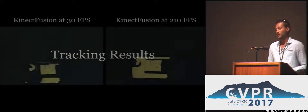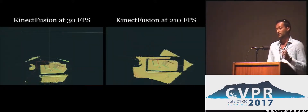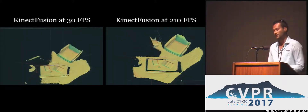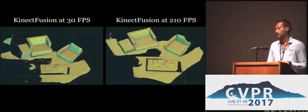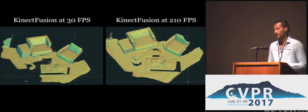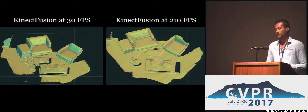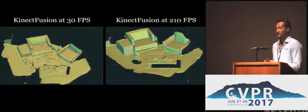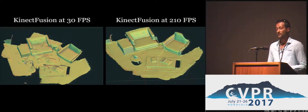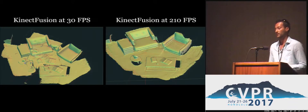We show some results on high-level applications such as static scene fusion at 30 FPS versus 210 FPS. At 30 FPS, the system is able to track up to a certain point, but due to large frame-to-frame motion it will start to hallucinate surfaces and lose tracking. At 210 FPS, instead, it is much more robust and we don't even need sophisticated bundle adjustment techniques or relocalization methods — it just works.